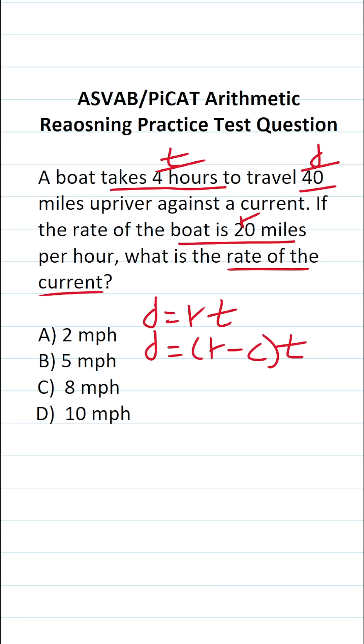So just like that, we made our modification to the formula. And now we can solve this question. We know distance is 40 miles. We know the rate of the boat is 20 miles per hour. We don't know what C is. That's what we're going to be solving for. And we know it took four hours to go those 40 miles. So all we have to do is solve this equation for C.